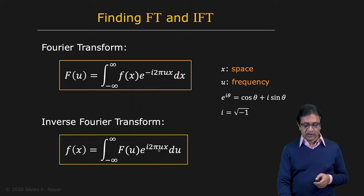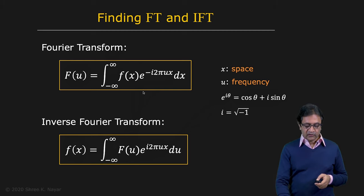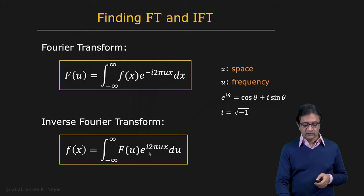e^(iθ) = cosθ + i·sinθ, which we will show shortly — so this is where you have your sinusoidal functions, with different frequencies u and different phases and amplitudes. The amplitudes and phases are captured by the Fourier coefficient F(u). You can see that the Fourier transform looks a lot like the inverse Fourier transform, with u and x interchanged, but the key difference is a minus i here versus a plus i there. So the Fourier transform is often referred to as the minus-i transform and the inverse as the plus-i transform.